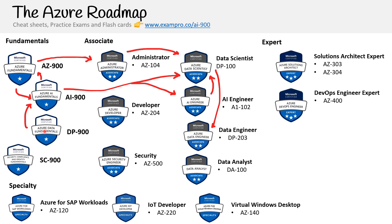Do you need the DP-900 to take the AI-900? No, but a lot of people like to go this route to have that data foundation before moving on to the AI-900, because that broad knowledge is going to be useful. It's a pairing you see a lot — people getting the AI-900 and DP-900 together.